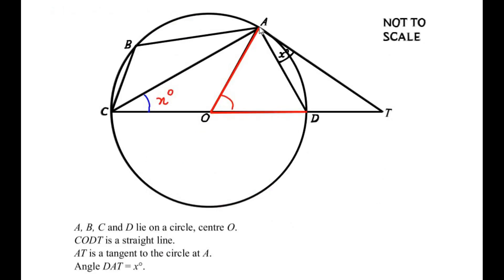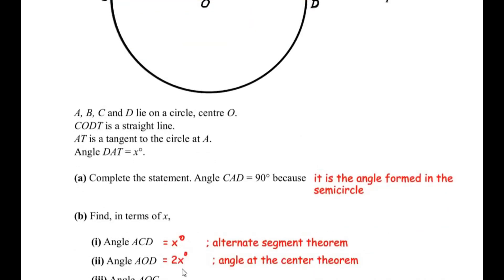In our example, points A and D are on the circumference and make an angle at the center O, and the same two points make angle x at point C on the circumference. Using the angle at the center theorem, if the angle at the circumference is x, then the angle at the center is exactly two times that — so angle AOD is 2x degrees, by the angle at the center theorem.